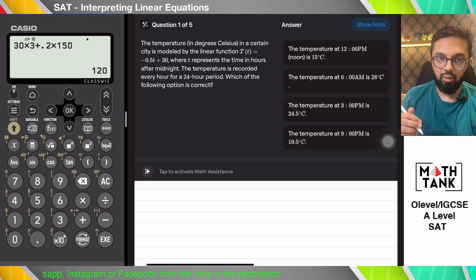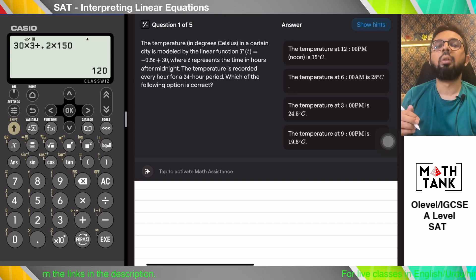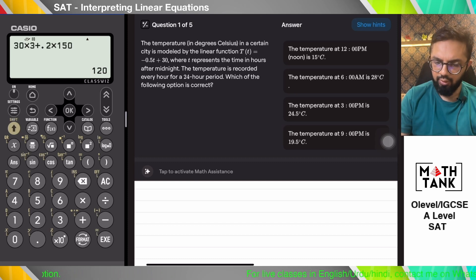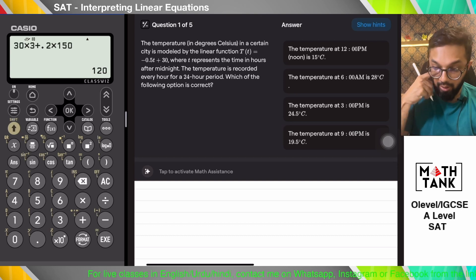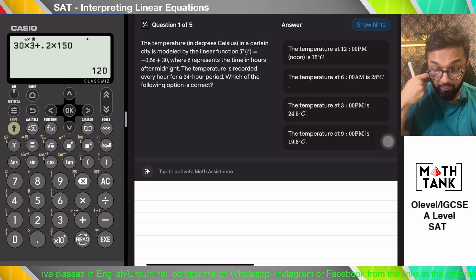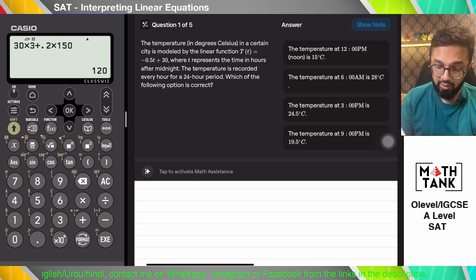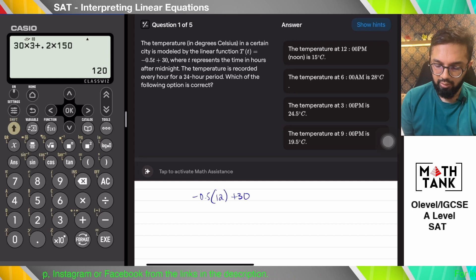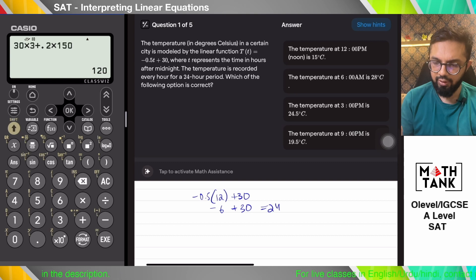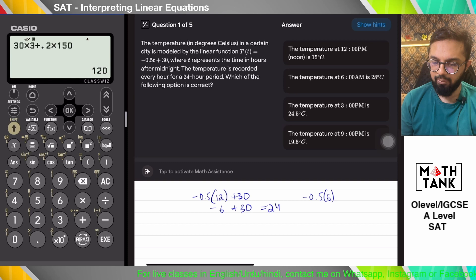Which of the following options is correct? For a 24-hour period, when 12 hours has passed, it says 15 degrees. Let's check if it has... So that gives me plus 30. No, that should be 24, so the first answer option is wrong. Let's see if the next answer option is correct. 0.5 times 6 plus 30, that gives me 28.